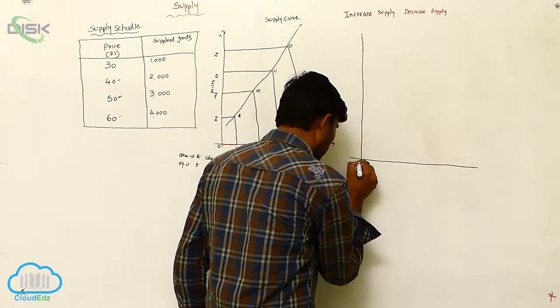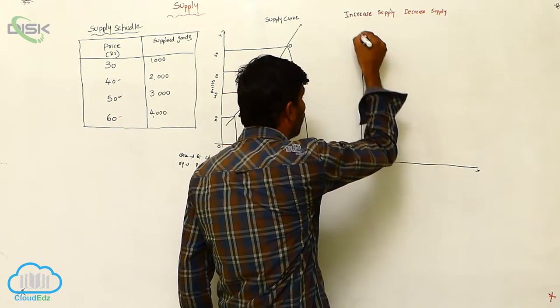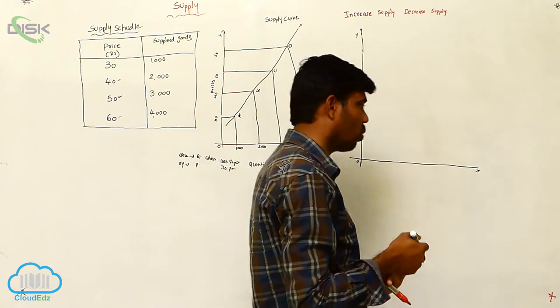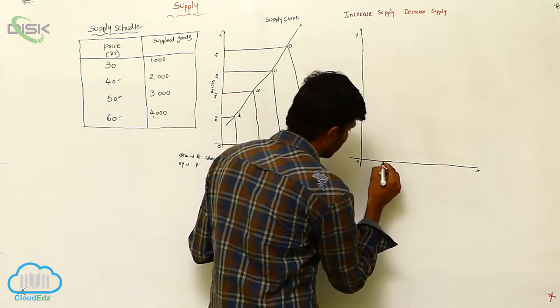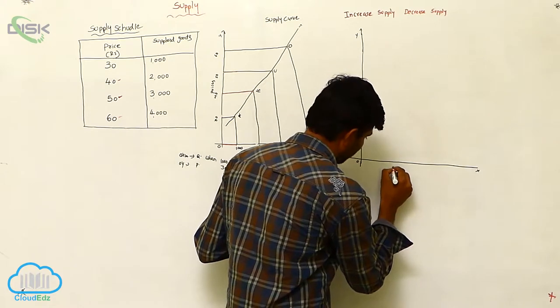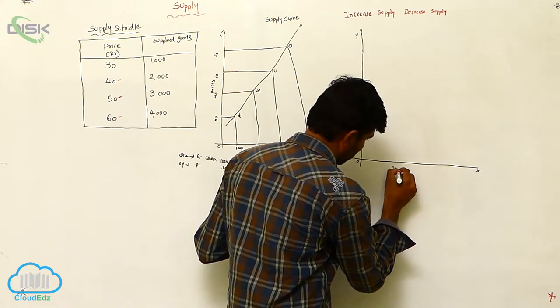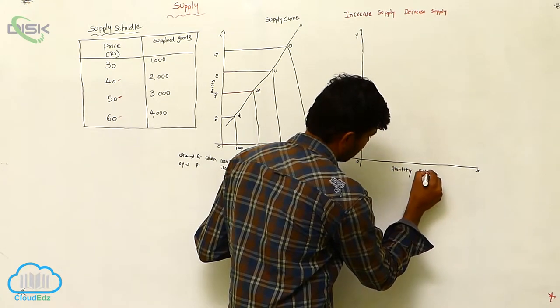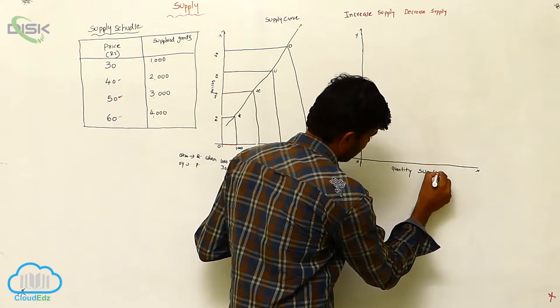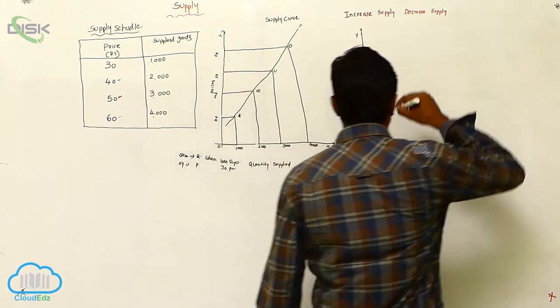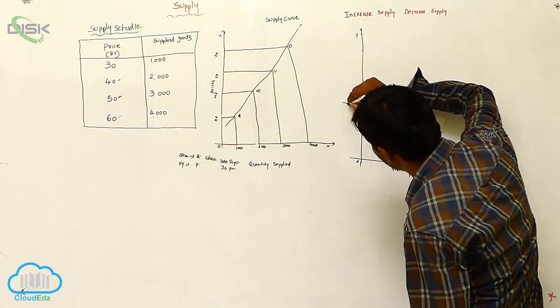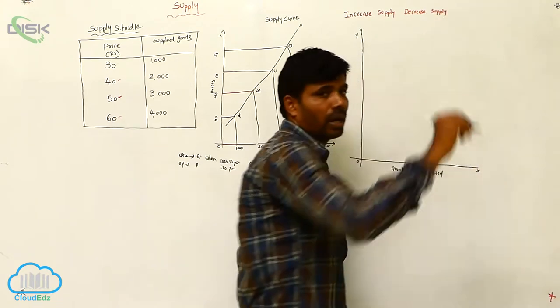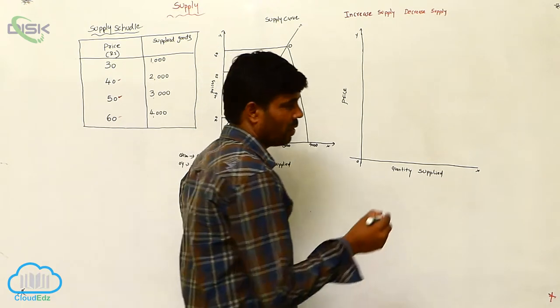We are going to consider OX, OY axes. In OX axis we are going to consider quantity supplied. Next is price. Now we are going to see these levels. First level.